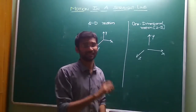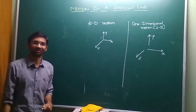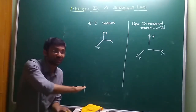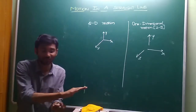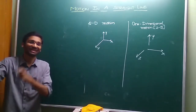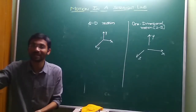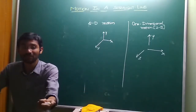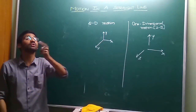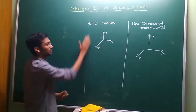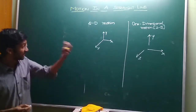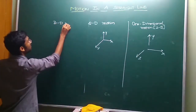An example of two-dimensional motion is a ball rolling on a flat board — that requires two axes. The third type is three-dimensional motion.